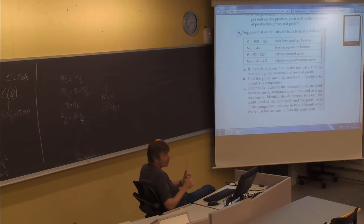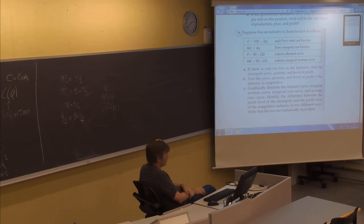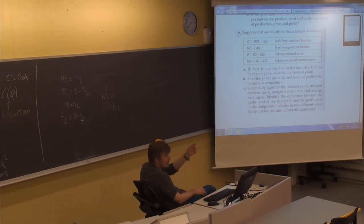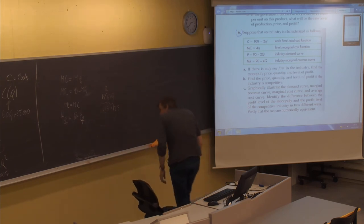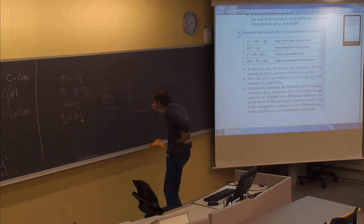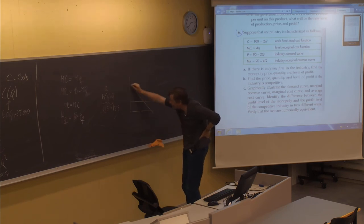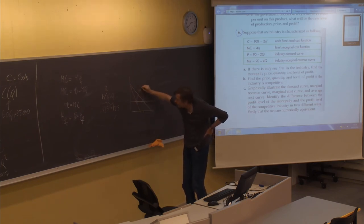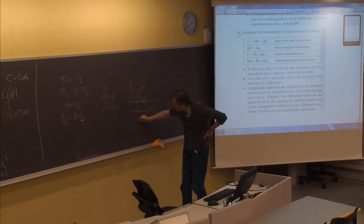In summary, to solve either the monopoly or perfectly competitive situation, we need a marginal cost curve in both cases. With the demand curve we can find the monopoly solution using the marginal revenue curve, or set the demand curve equal to marginal cost to find the perfectly competitive solution. The perfectly competitive solution is at the intersection of the marginal cost curve and the demand curve; the monopoly solution is at the intersection of the marginal cost curve and the marginal revenue curve.